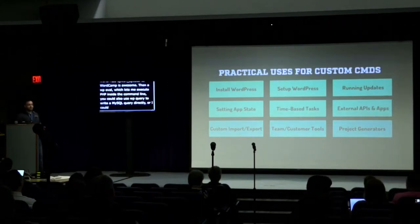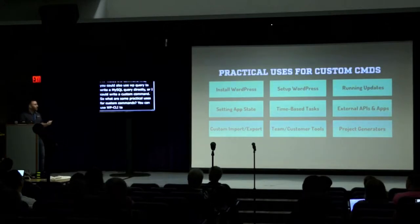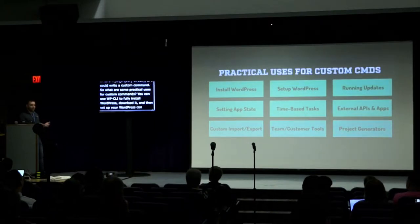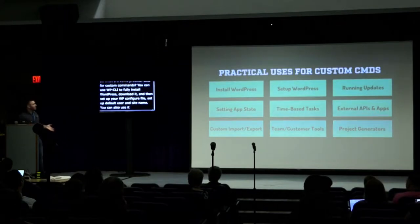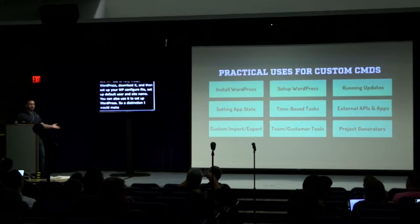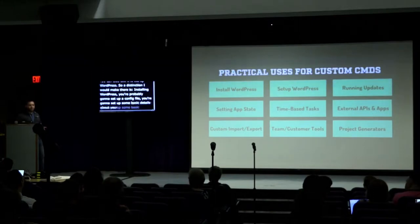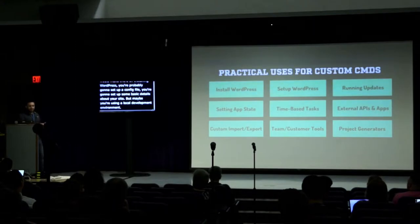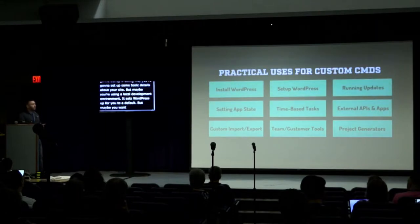What are some practical uses for custom commands? You can use WP-CLI to fully install WordPress — download it, set up your wp-config file, set up your default user and site name. You can also use it to set up WordPress in a specific way. Maybe your local development environment already sets WordPress up to a baseline, and you want to delete all the default themes or have a set of core development plugins every time you spin up a site in Lando, Local by Flywheel, or Desktop Server.